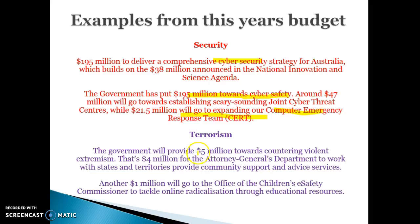On terrorism, the government is spending $5 million towards countering violent extremism, targeting anyone involved in ISIS or similar extreme behaviour. $4 million from the Attorney General will work with states and territories to provide community support and services. Basically, they're putting money towards security, terrorism, and defence to try and improve our non-material living standards.